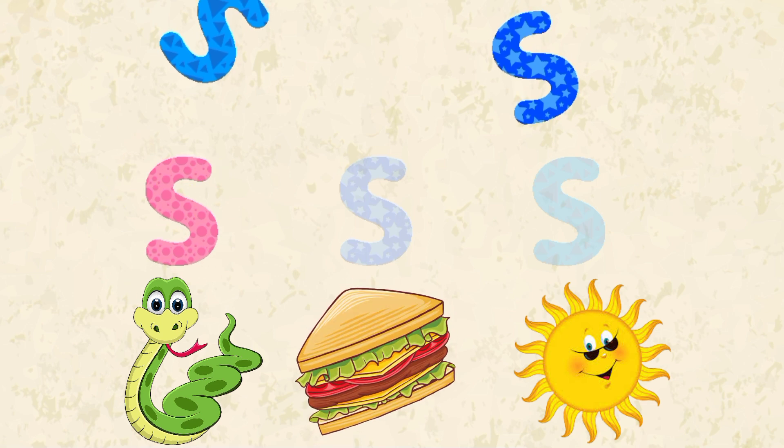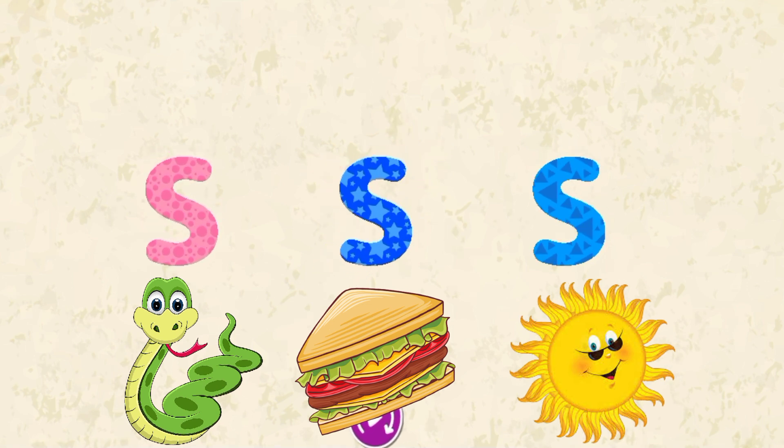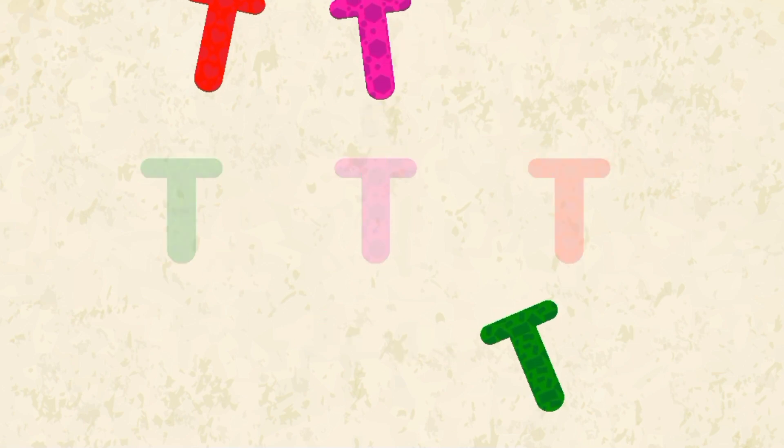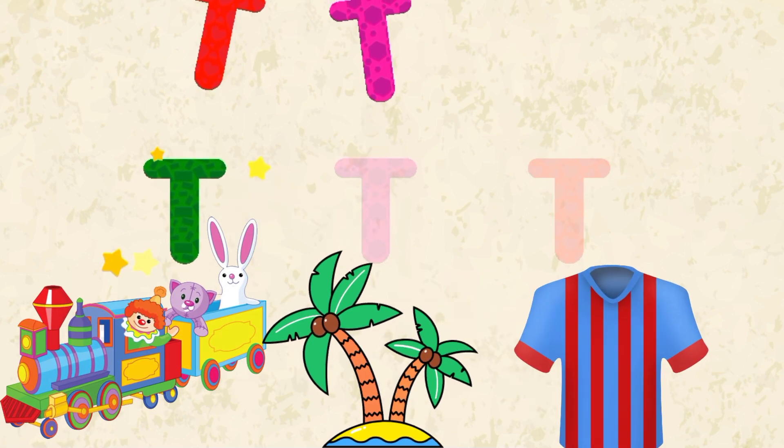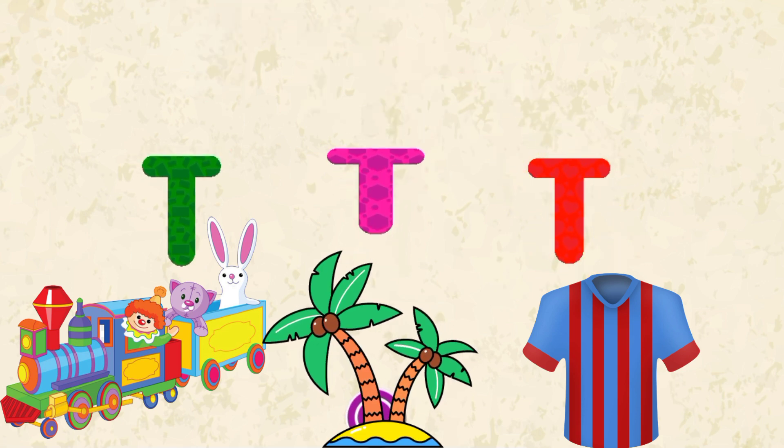Letter S. S for Snake, S for Sandwich, and S for Sun. Letter T. T for Train, T for Tree, and T for T-shirt.